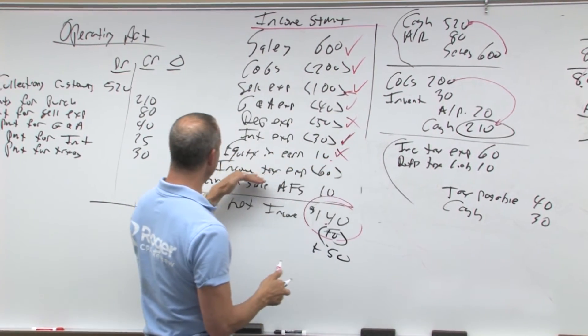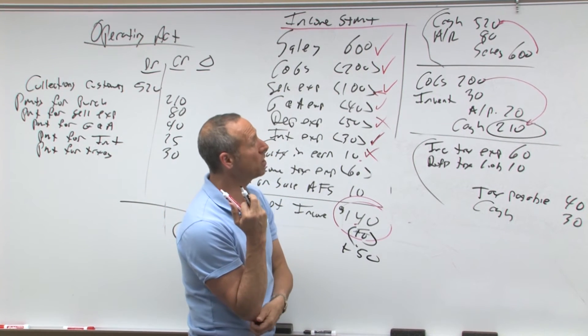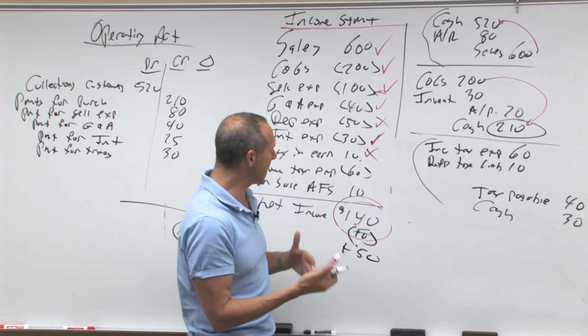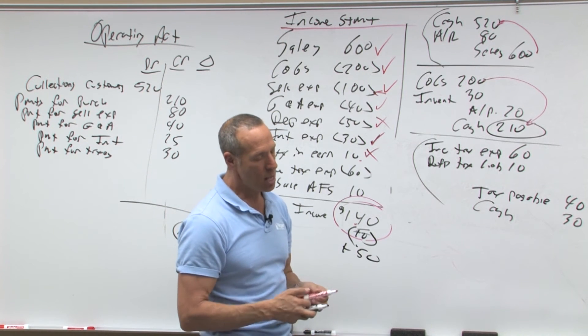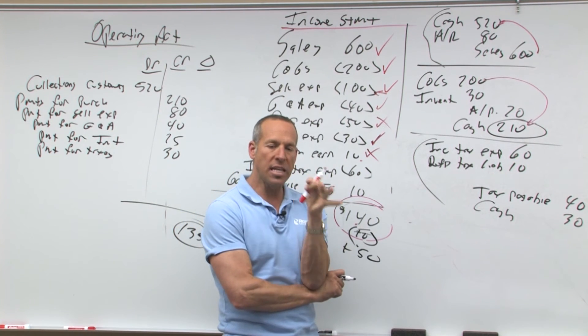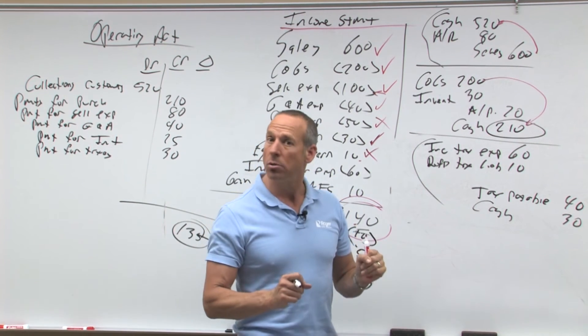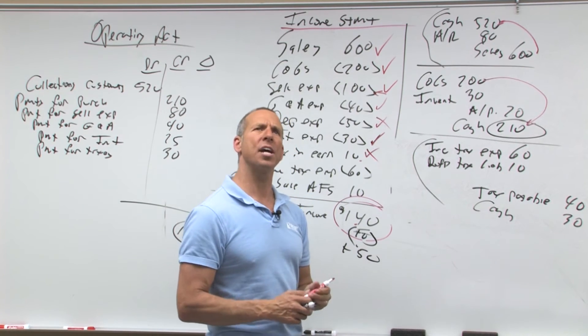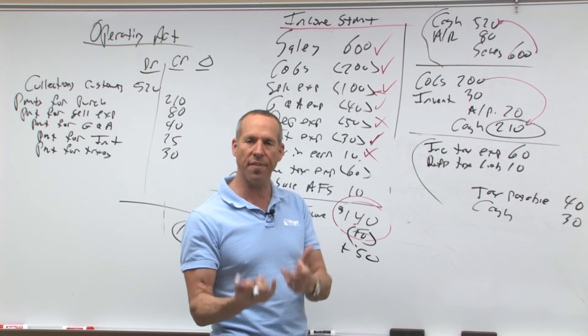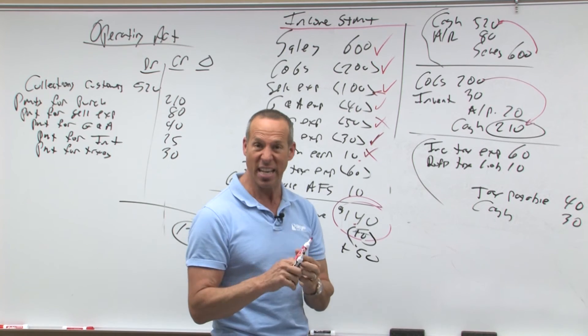The next one is gain on sale of AFS. So I sold an investment, and when I sold an investment, I had a gain on the sale of this investment. Let's think about it. I have a gain on the sale of an investment. If you sell an investment, that cash should be what kind of inflow? Operating or investing? Investing.